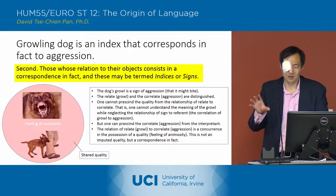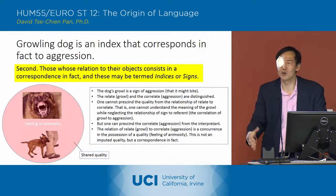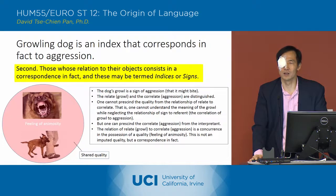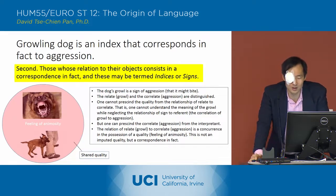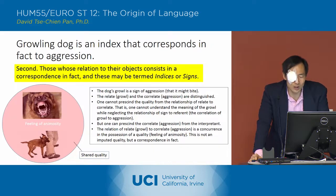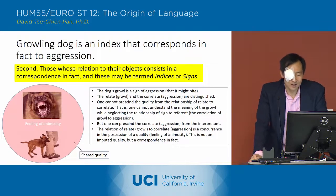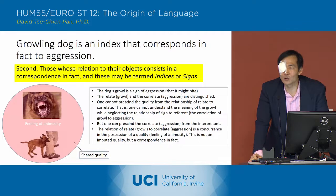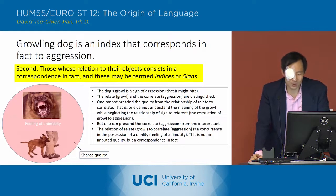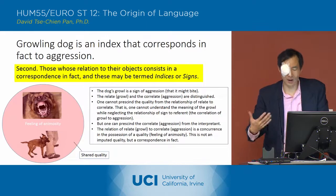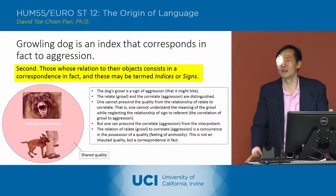But you can present the correlate — so growling and biting — from the interpretant. We can ignore the interpretant even while looking at the relationship of growling to biting, because there is a correspondence in fact between the growling and the biting.